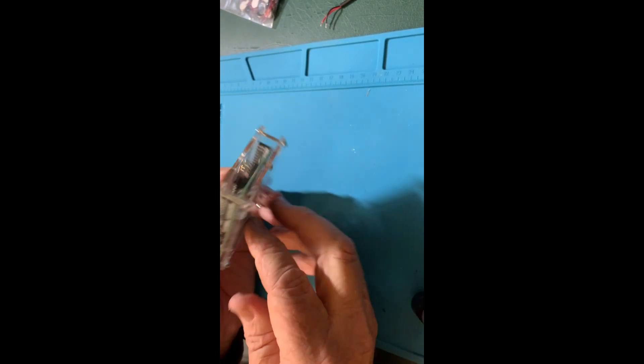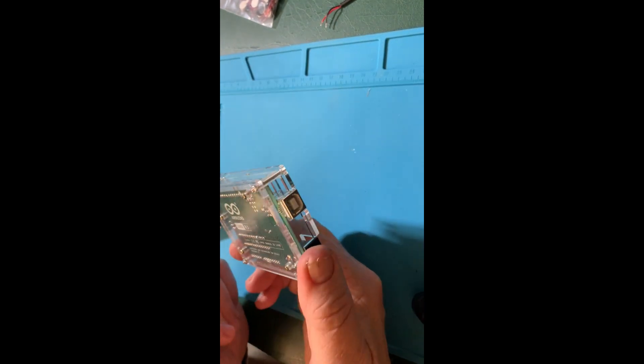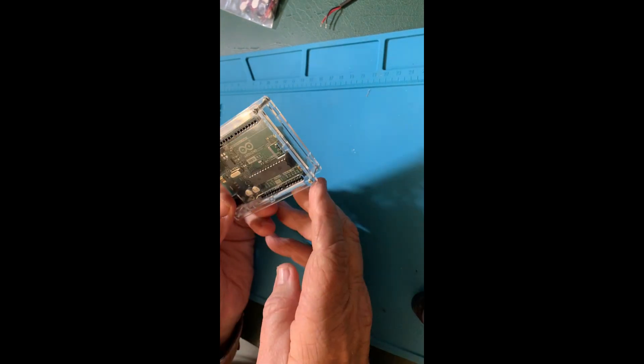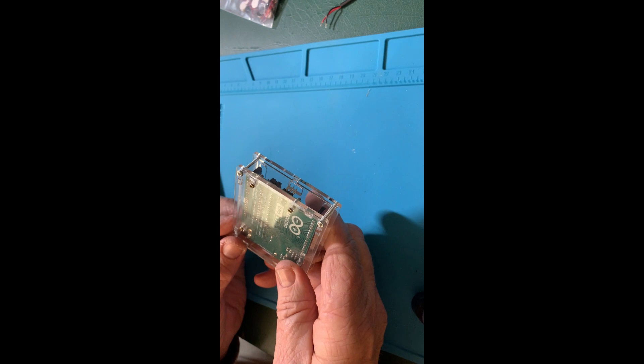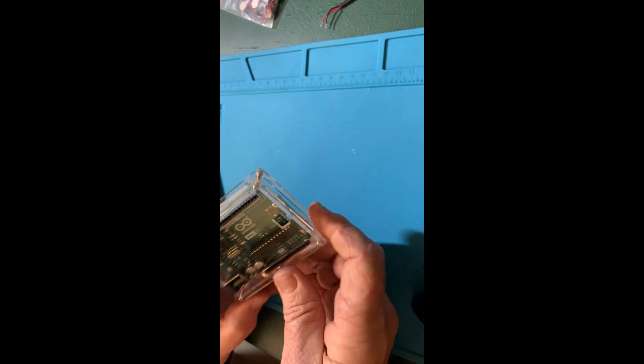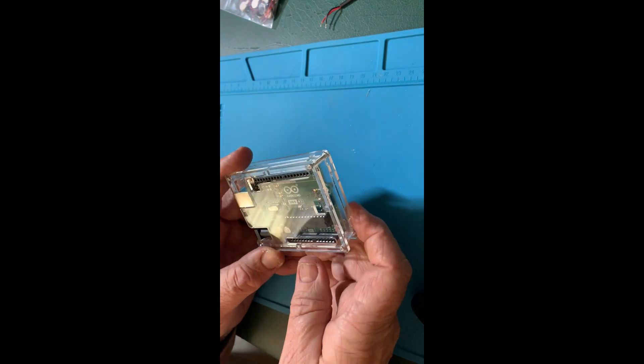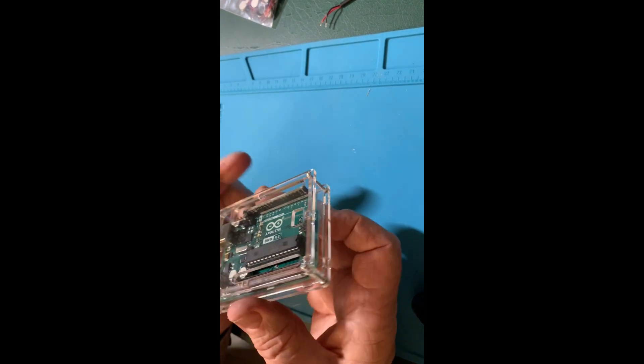So I peeled off the brown protective paper, assembled the case per the instructions, and now I have an Arduino Uno, technically an Uno R3 in a nice clear case. This is a nice case. I'll put the part in the attachment, but any case will do.